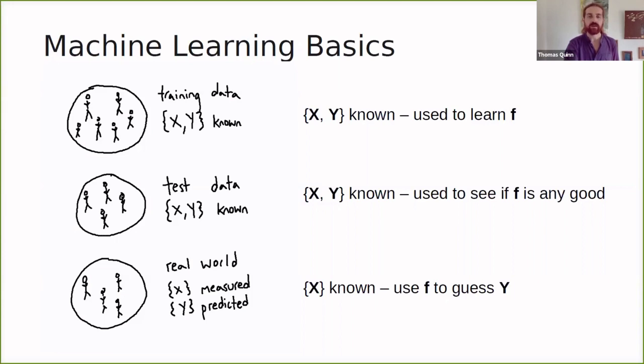We've also got another data set, which we call the test data, where X and Y are also known. And we're going to use this to see if F is any good. We're going to use this by deploying F, getting the prediction, which we call Y hat, and comparing that Y hat against Y. Now we use this test data to see if our function F is any good.